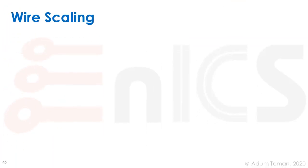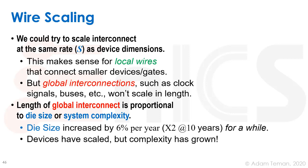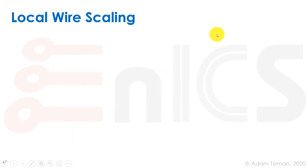In the previous lecture we discussed transistor scaling, but what about the wires? We could try to scale the interconnect at the same rate as device dimensions — we called that rate s. This makes a lot of sense for local wires that connect to smaller devices and gates; they just scale along with them. But there are also global interconnections like clock signals and buses that won't scale in length — in fact, global interconnect length is proportional to die size and system complexity.